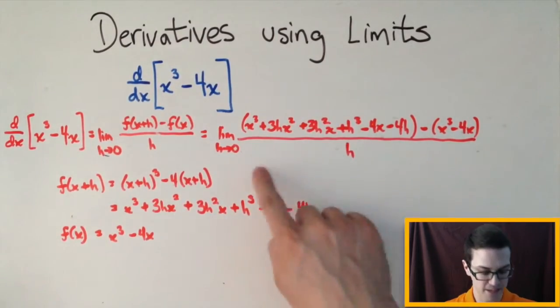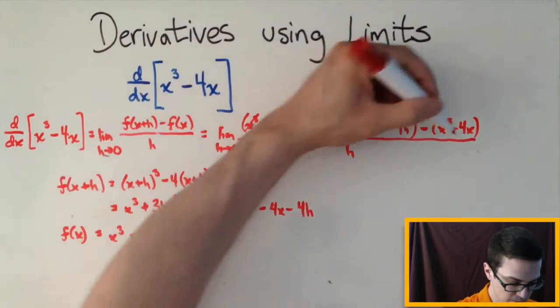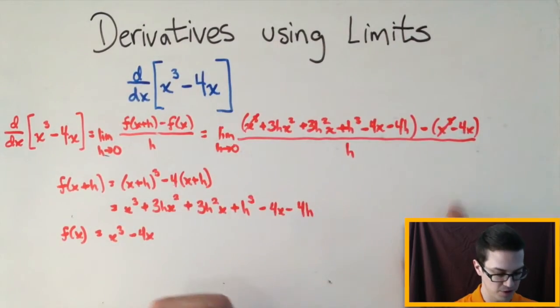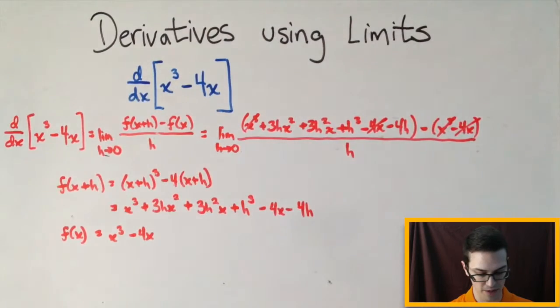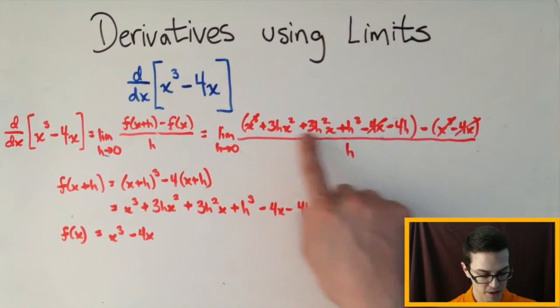So from here I can cancel some things out. So it's x cubed minus x cubed. So that would cancel out for 0. This minus 4x minus minus 4x would cancel out as well. So now you're left with just this right here.